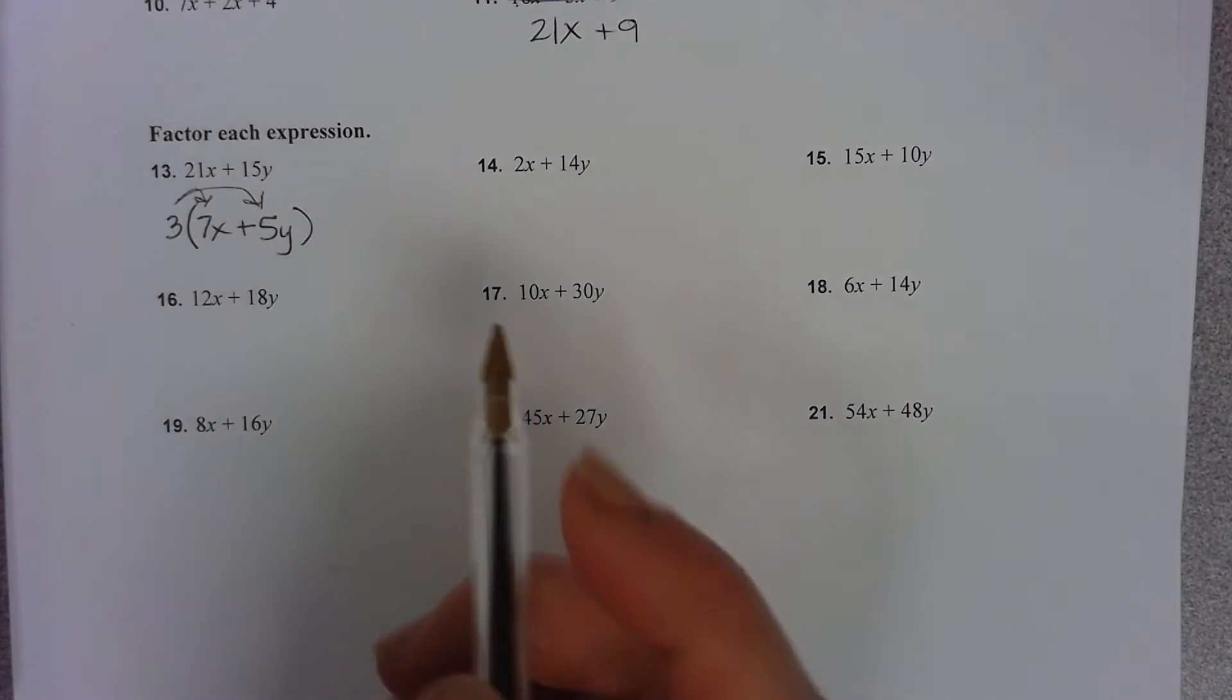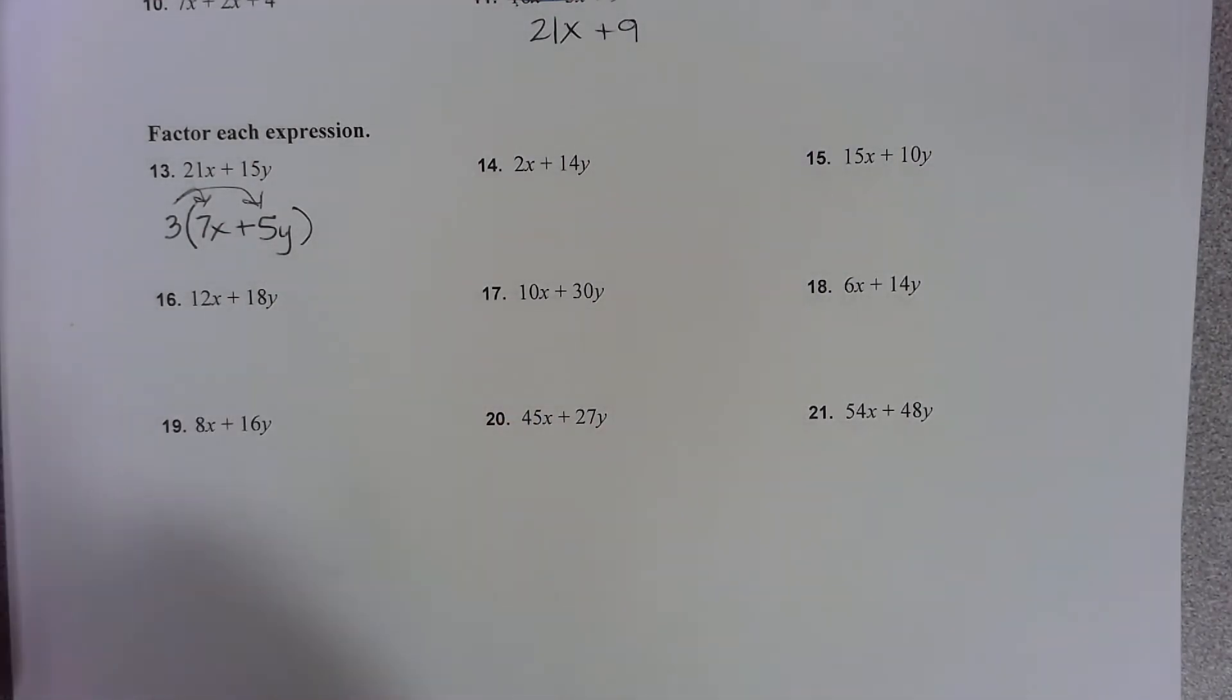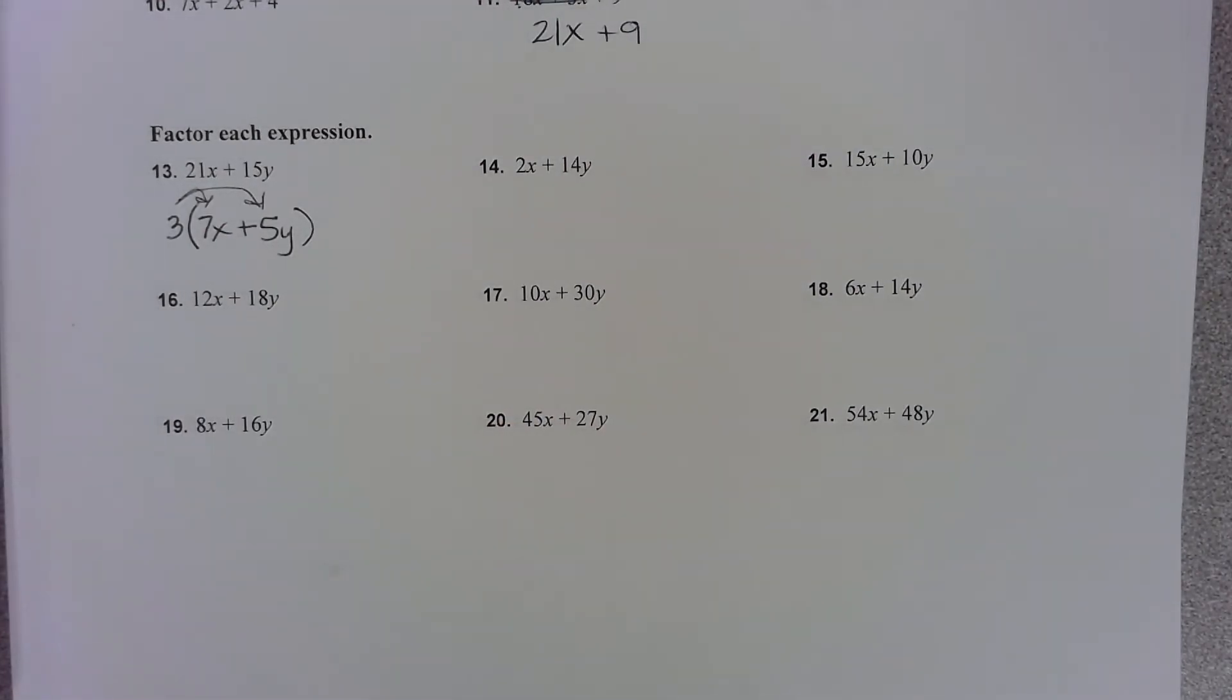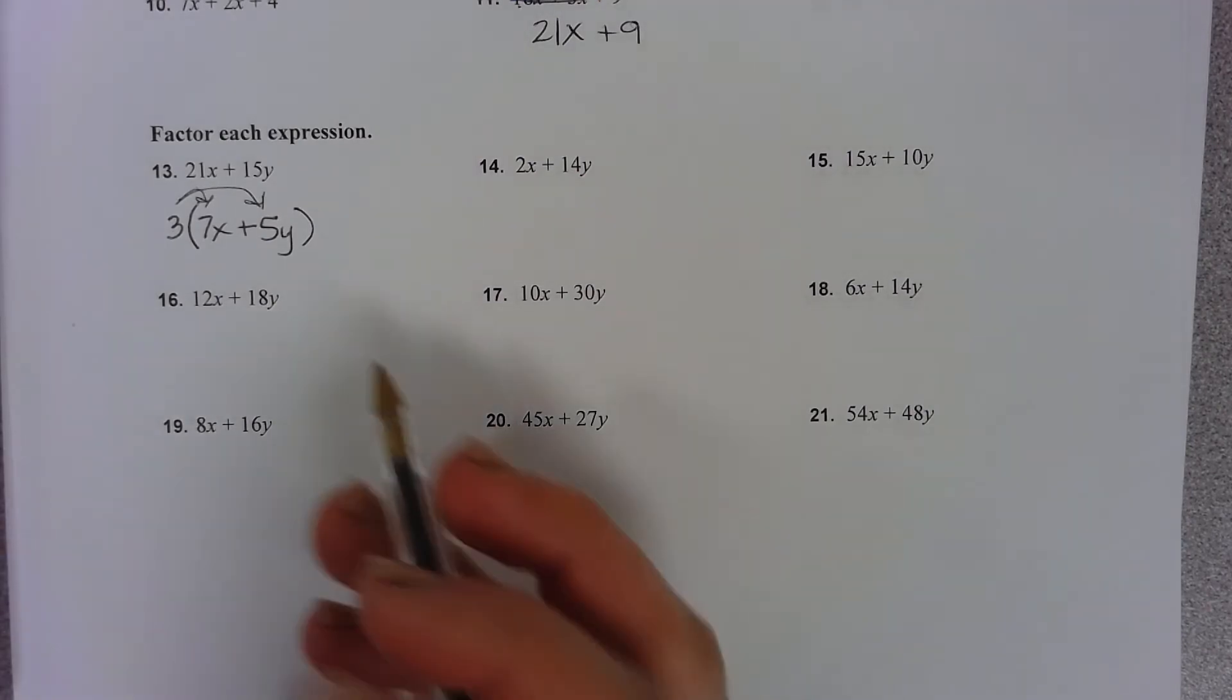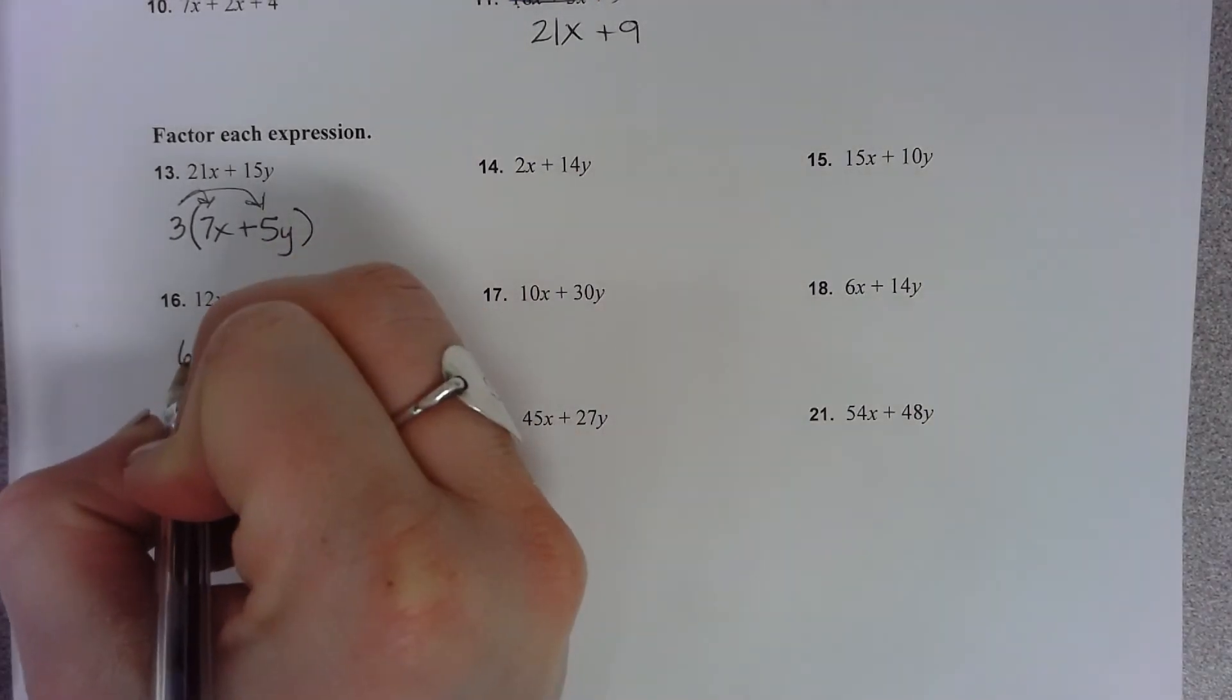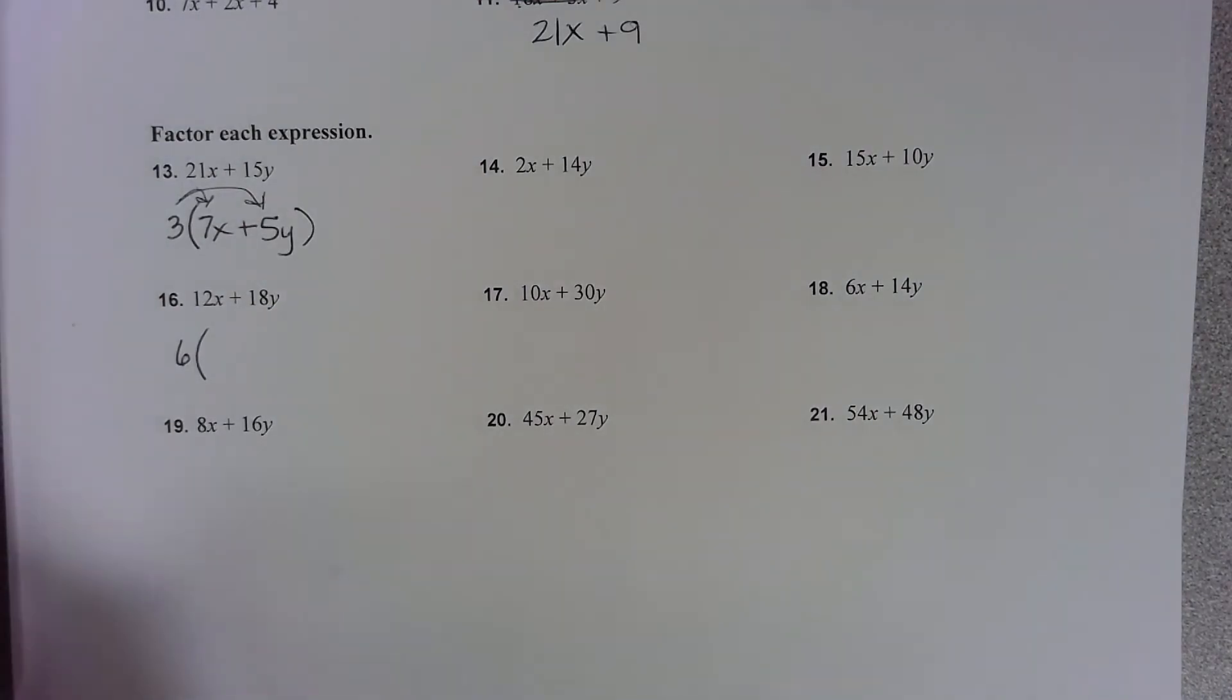Okay, I'll do one more with you. Number 16. 12x plus 18y. Well, the GCF of that, I know 6 can go into both of those, and that's the highest number that can go into both 12 and 18. So I'm going to pull 6 out from each one of those, which means I'm dividing each term by 6.